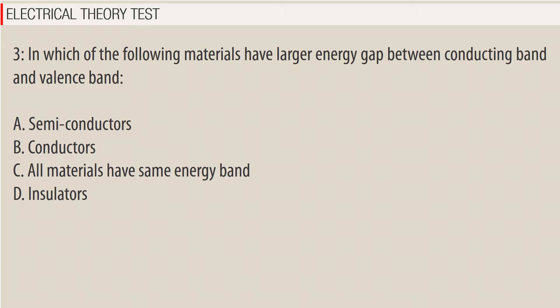Question 3: In which of the following materials is there a larger energy gap between the conduction band and valence band? A. Semiconductors. B. Conductors. C. All materials have the same energy band. D. Insulators.